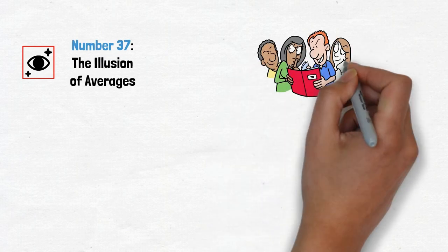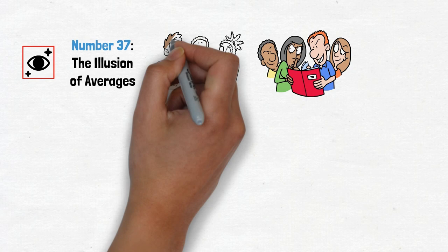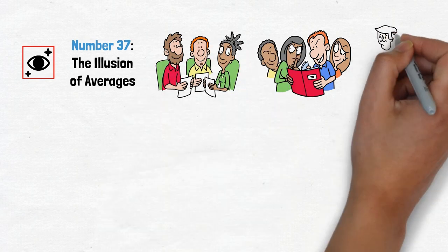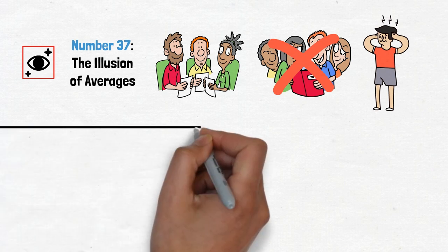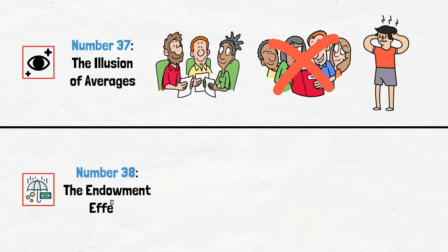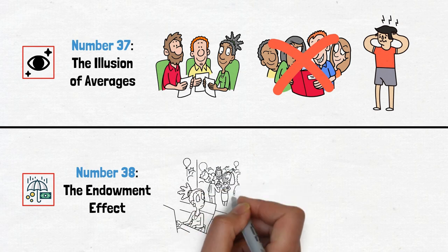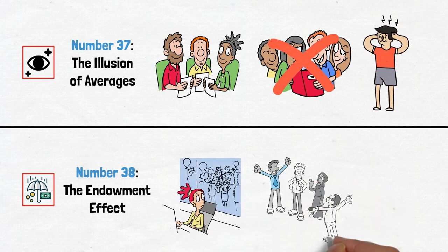Number 37, the illusion of averages. Look beyond the surface and consider the full story. Don't let averages obscure the reality of a situation. And lastly, number 38, the endowment effect. Let go of attachments and embrace change. Don't let possessions define your worth.